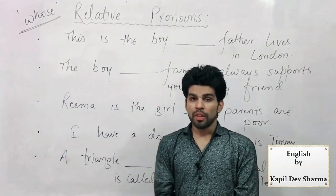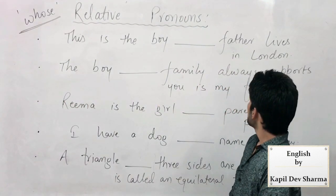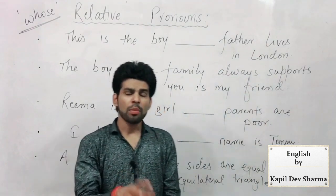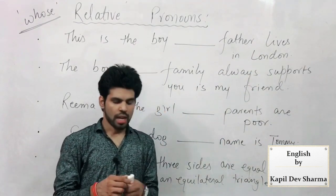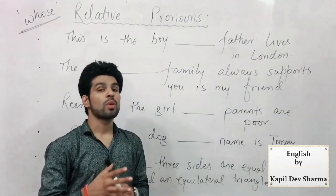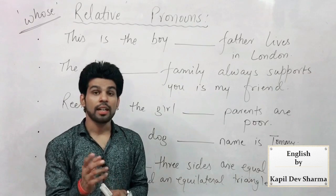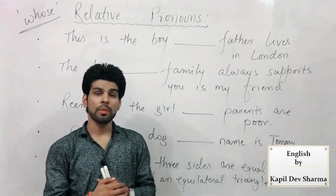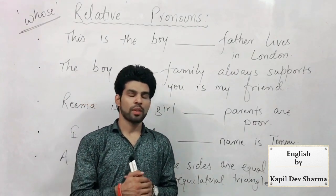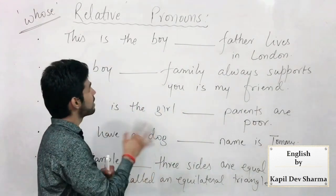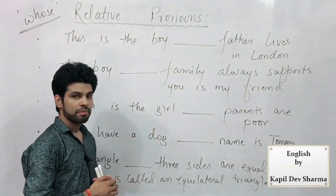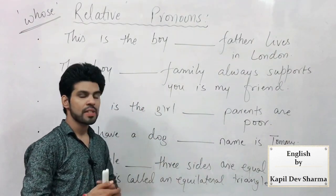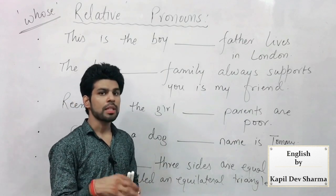So the very first one: 'This is the boy ___ father lives in London.' I'll say — try placing all the old pronouns here first. If they work, that's fine; we won't need any new pronoun. Let's try: 'This is the boy' — yeh voh ladka hai — '___ father lives in London' — aage mujhe nahin pata.